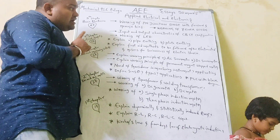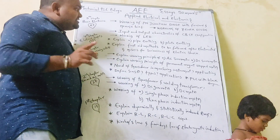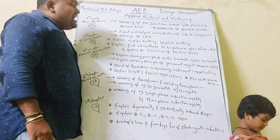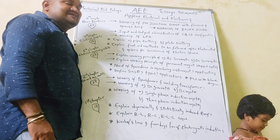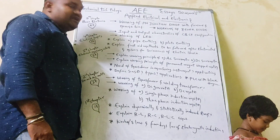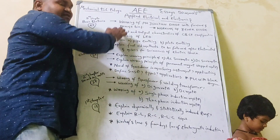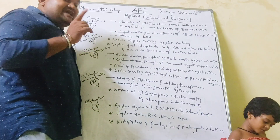This is the same question. Then, what are the input and output characteristics of CB and CE configuration, and working of LED? For these questions, you will get 20 marks.